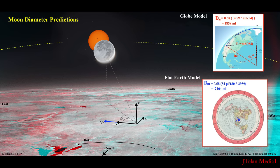And up top, I have the equations all calculated out. And that predicts a diameter of the moon of 1,858 miles.